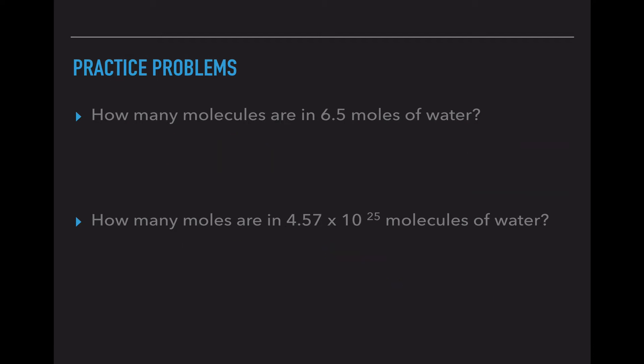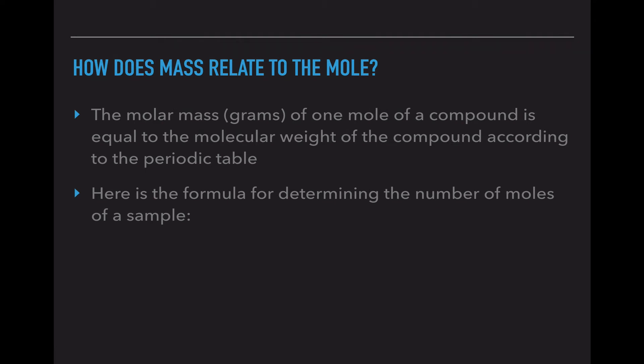We've already done this in class, so this is not new information. But we are going to put this together to make something new. The molar mass in grams of 1 mole of compound is equal to the molecular weight of the compound according to the periodic table. So for example, we determined that CO2, carbon dioxide, had an atomic mass of 44 atomic mass units. What this statement is saying is that the molar mass of 1 mole of CO2 is 44, just like it was using the periodic table. We are going to use that information along with the equation number of moles equals sample mass over molar mass.